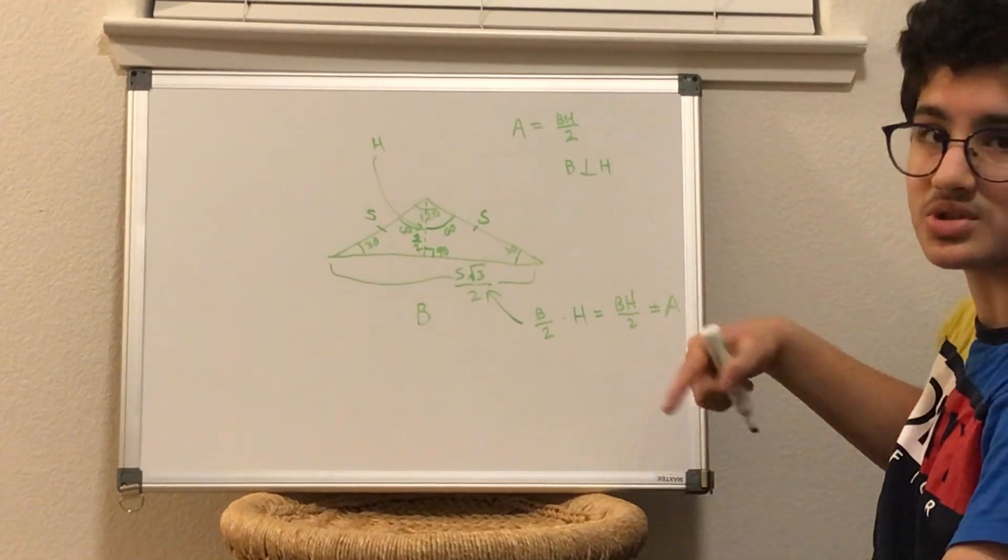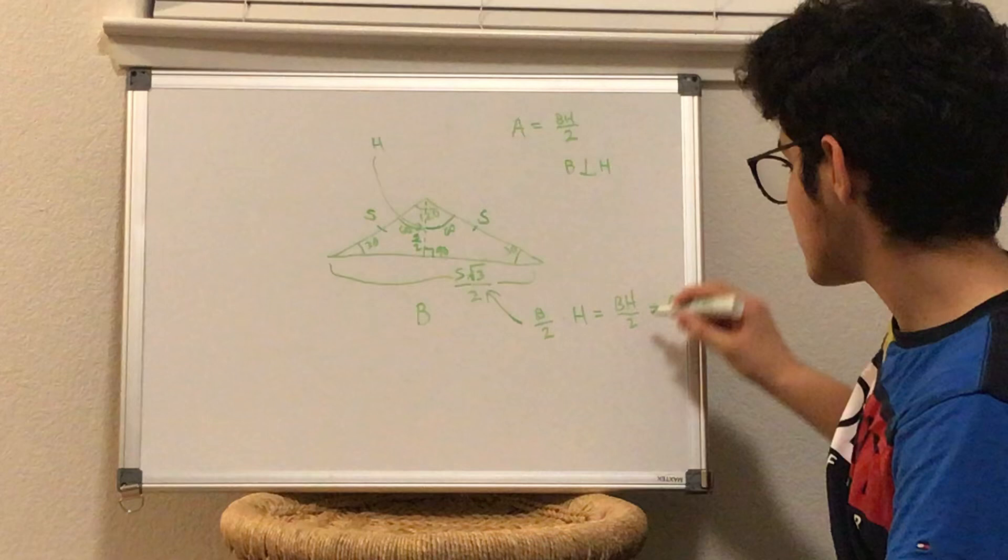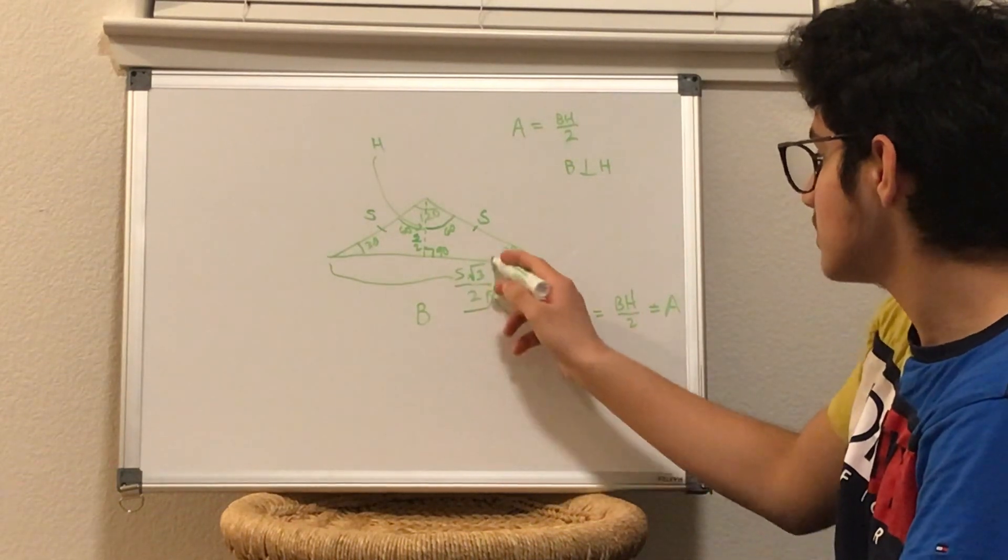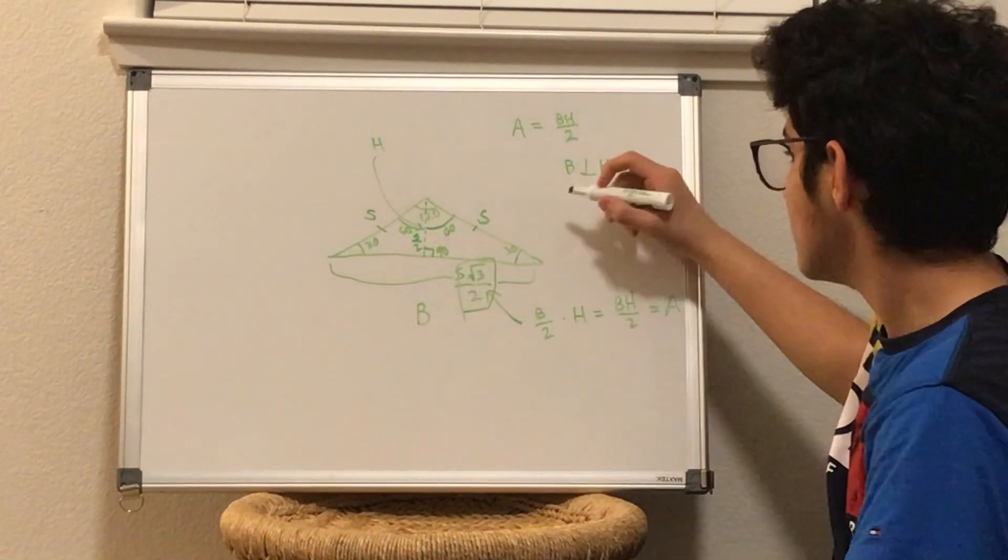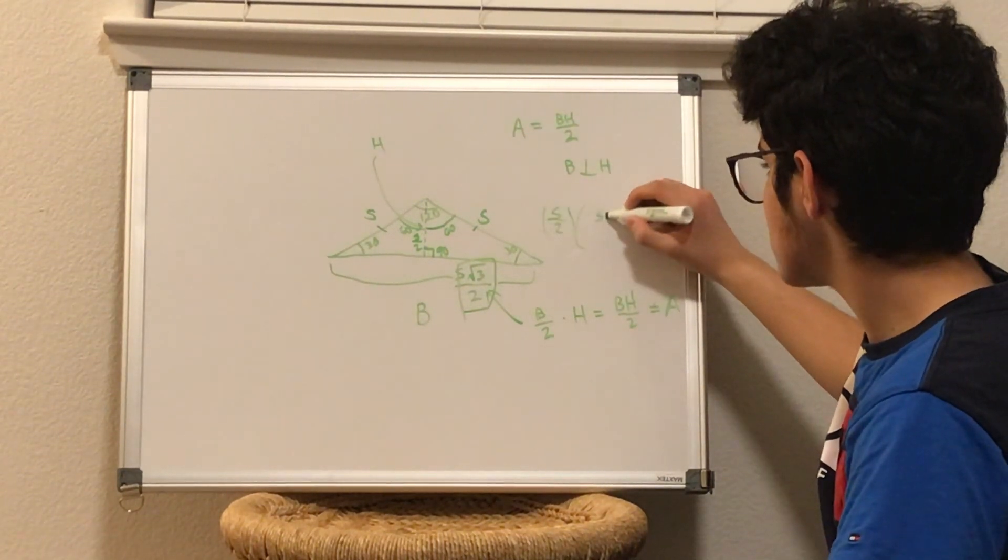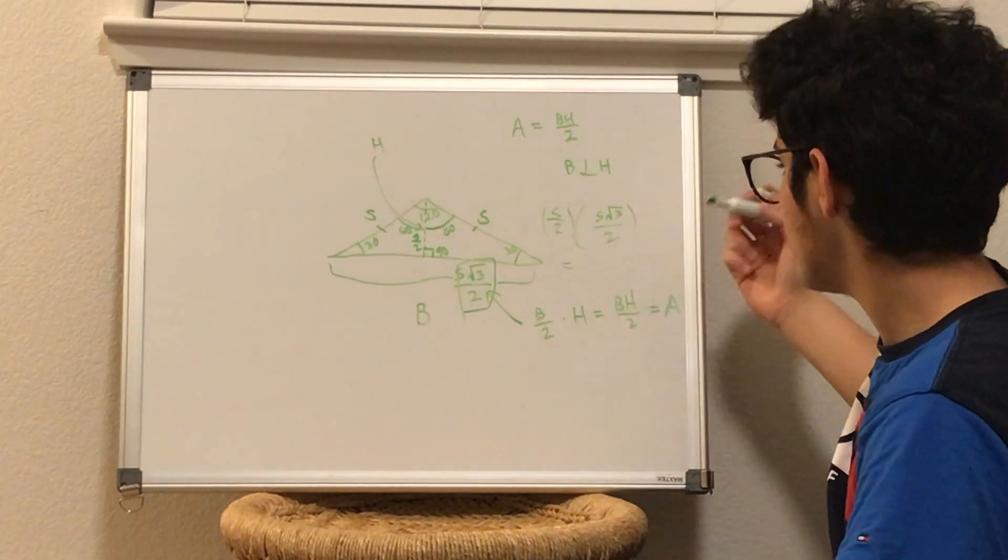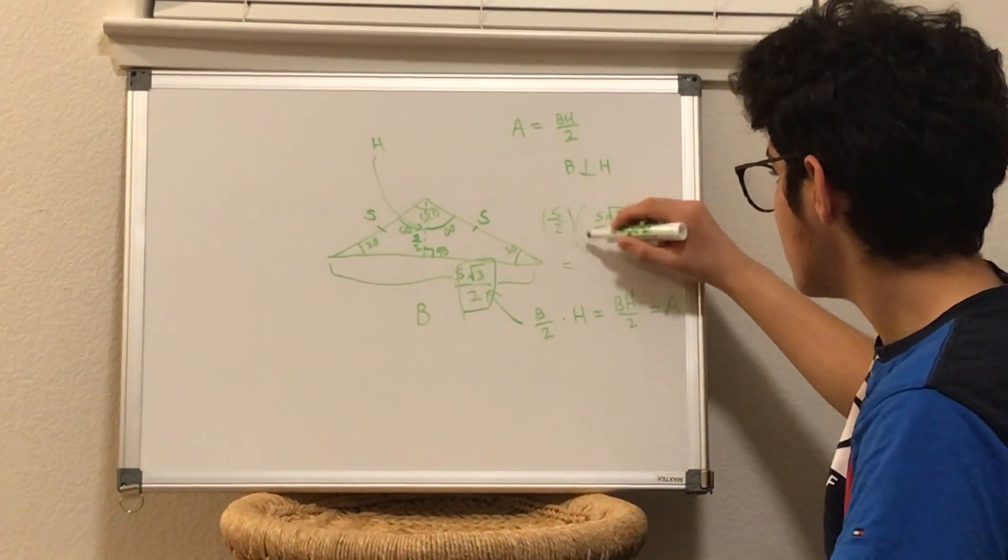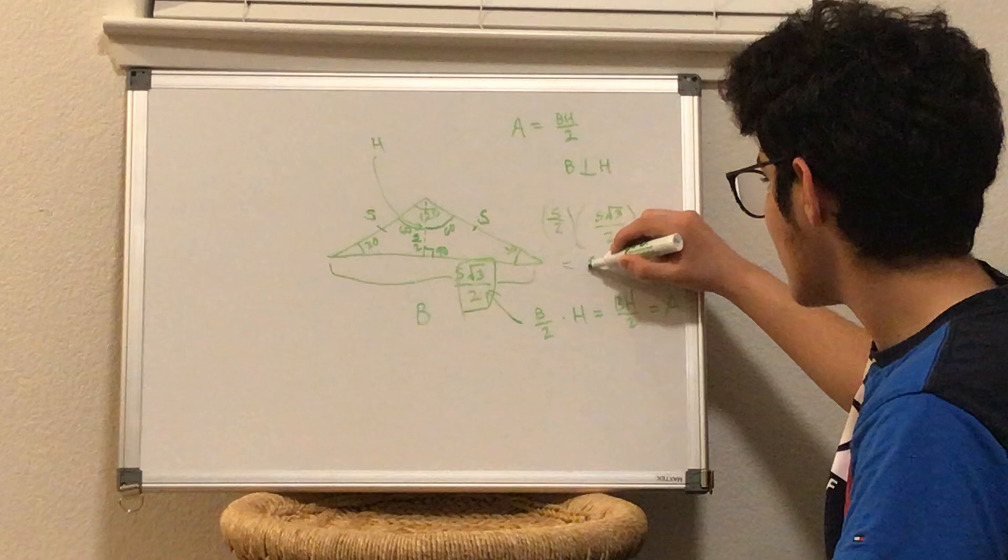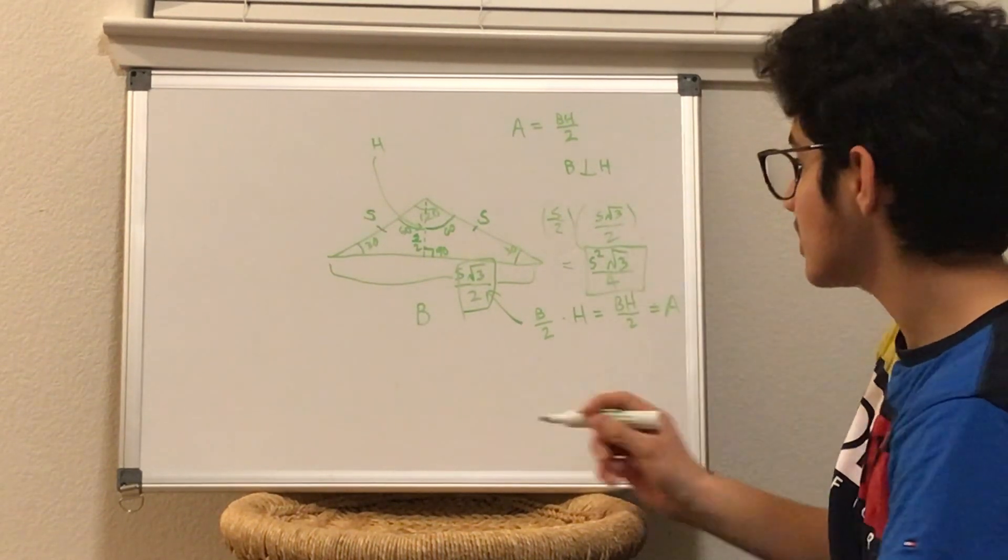So just look at that once. All we need to do is multiply this by the height over there. And so that's pretty simple to do. S root 3 times S over 2. And what does this give us? We multiply the numerators first. S squared root 3 divided by 4. And so that's our final answer.